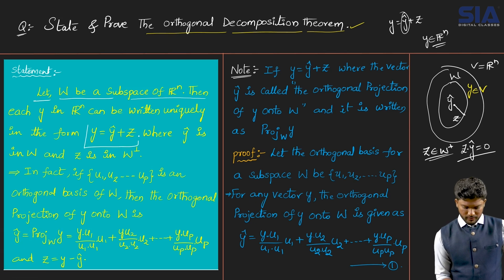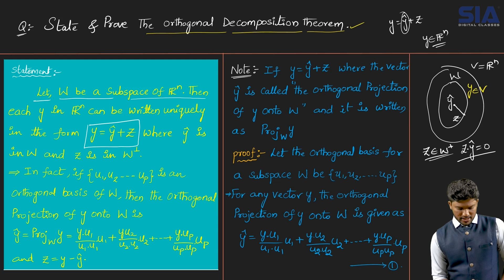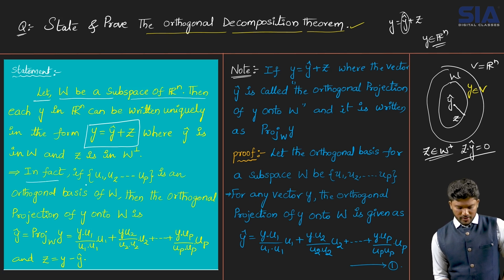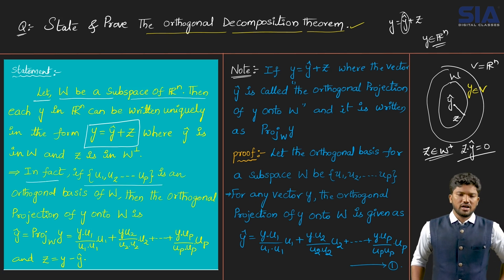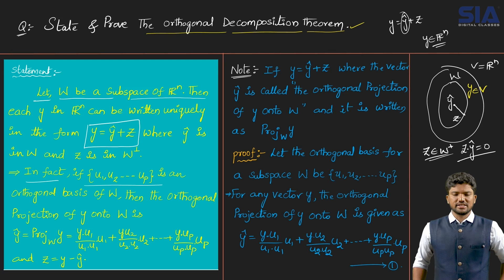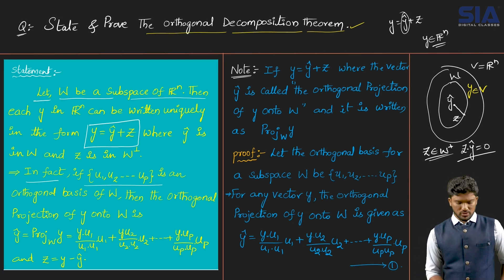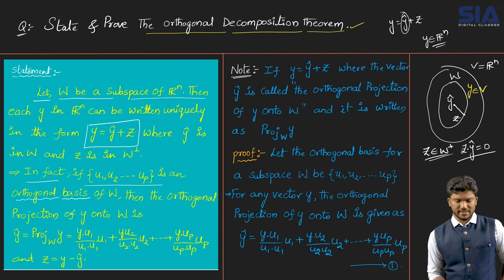We can write y equals y-hat plus z. In fact, whenever we take an orthogonal basis — that is, {u1, u2, ..., u_p} — as an orthogonal basis of the subspace W, the orthogonal projection of y onto W follows from this basis.